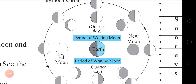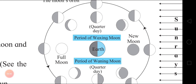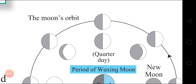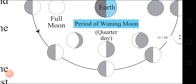Third: Quarter days. On the first and the third quarter days, the sun's light falls on the half portion of the moon facing the Earth. Therefore, the moon disc appears as a semicircle.